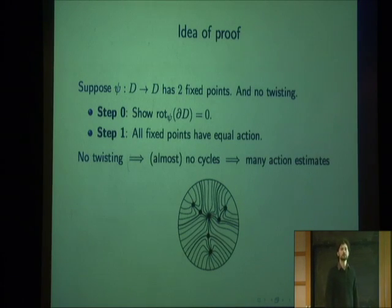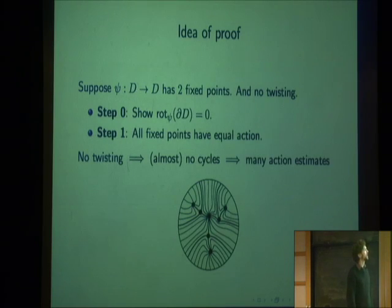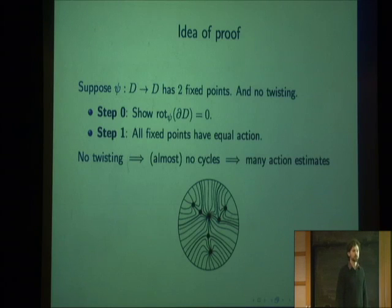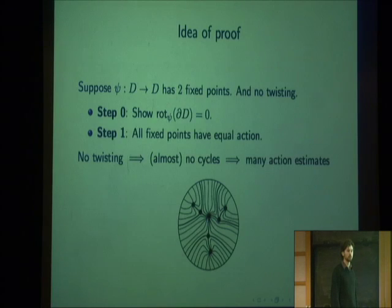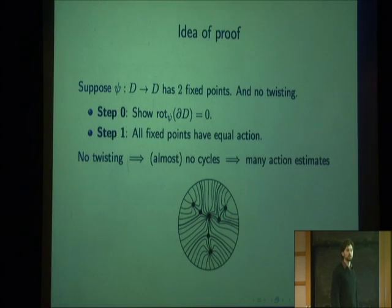There was a quick question about topological entropy of area-preserving maps of this type. The response was that typically they would have positive topological entropy, because if you perturb such a map you'd have a hyperbolic periodic orbit with transversal intersections of its stable and unstable manifolds.